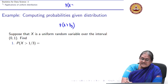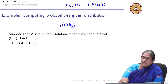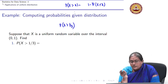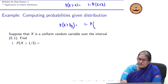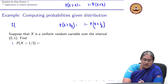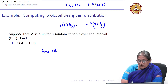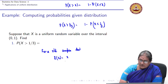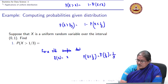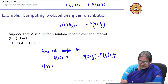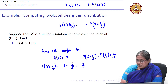We know that probability X is greater than 1/3 is going to be 1 minus probability X is less than or equal to 1/3. For a standard uniform distribution, F(x) = x, and hence probability X less than or equal to 1/3 equals F(1/3) = 1/3, which gives probability X greater than 1/3 = 1 - 1/3 = 2/3.